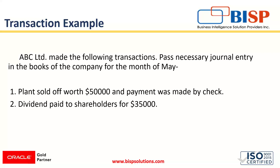The second transaction is dividend paid to shareholders for $35,000. Dividends are the amount paid to shareholders as their reward for investing in the business, paid monthly, yearly, or quarterly. So these are the two cases we have taken today.